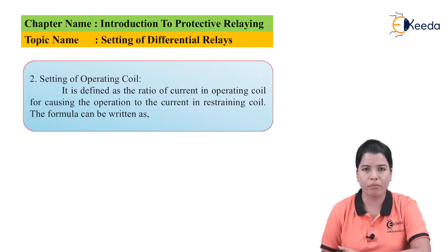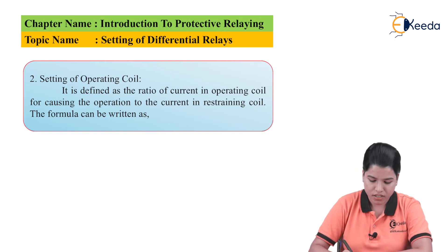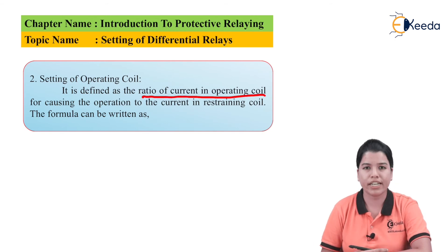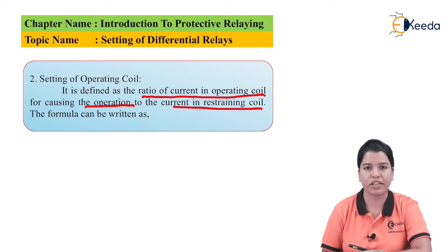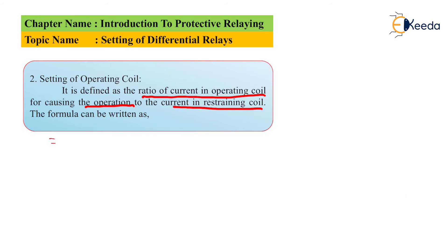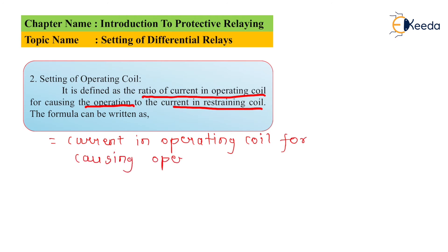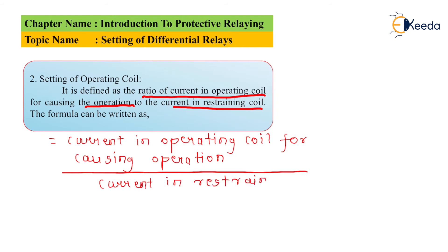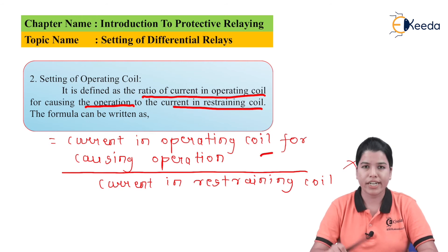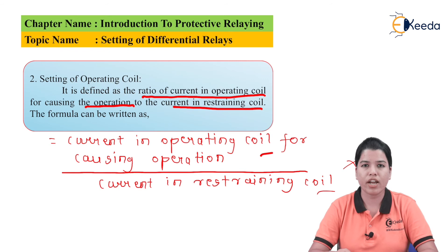Next is the setting of the operating coil. It is defined as the ratio of current in the operating coil for causing operation to the current in the restraining coil. The formula is given by: current in the operating coil for causing operation, divided by current in the restraining coil, multiplied by 100.